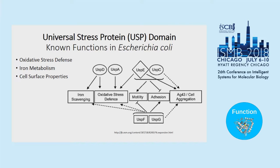Here's an illustration that shows the function of six USP genes in E. coli. The goal of our research is to predict the functions of universal stress proteins in actinomyces.